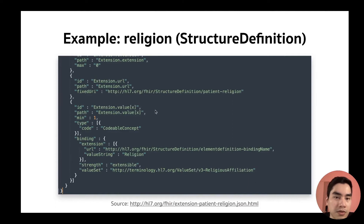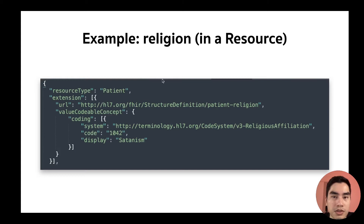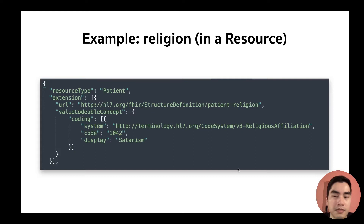When we use the extension in a resource, the resource type is declared, then we put an extension element. The URL specifies the canonical URL of that extension, and below is the value of that extension. You can see there is only a single value in that extension — even though inside it is a complex data type, it is still a single value. For example, if a patient's religion is Satanism, it will look like this.